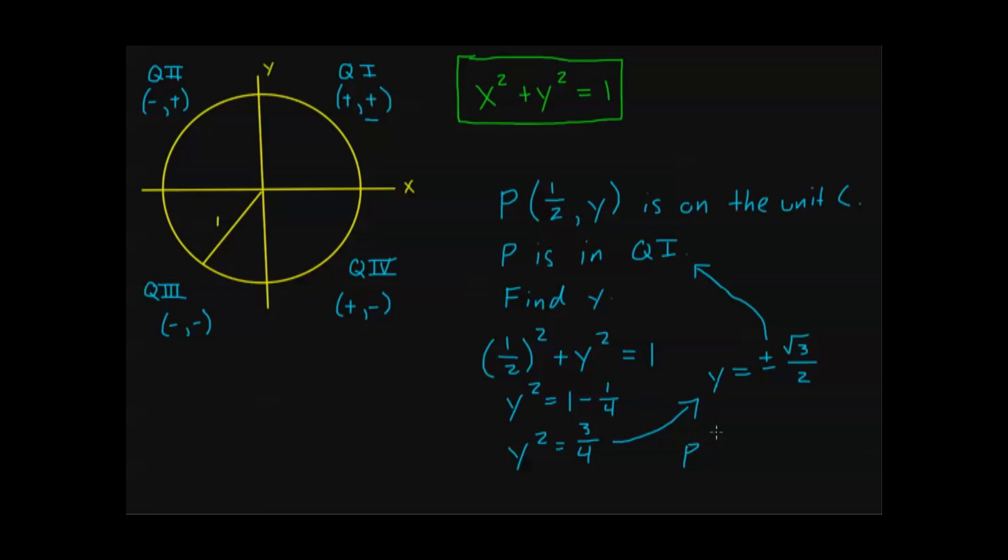So my final answer would be p is (one-half, positive square root of three over two). Or, depending on what it's asking for, my final answer might just be y is positive square root of three over two.